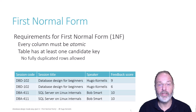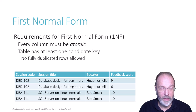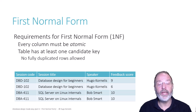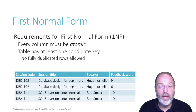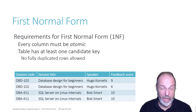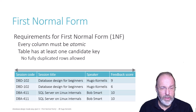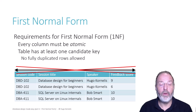Bob Smart received a feedback score of 10 from one attendee, but also a feedback score of 10 from another attendee. Now we have two rows that are exactly identical. This is not allowed in the relational model. Relational tables do not have an order, so we can never specify the first or second row. And we still want to be able to address a single row — if we want to delete one row and not both, we need to be able, using the values in that table, to uniquely identify that row. That's not possible with this table design because there is no candidate key on the table.